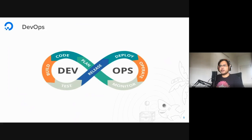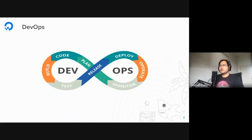Once you've jotted down all your requirements and are clear on what features your software should have, you move on to the coding part where the development team takes those requirements and creates those features — basically codes them out. After coding, you move on to the build stage. The build stage depends on what your delivery vehicle is for your product — you might want to create a deb package, an RPM package, or a Docker image. Once you've built that package, you move on to the testing part.